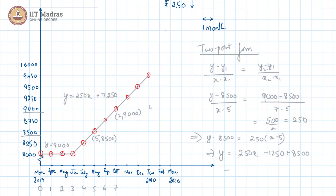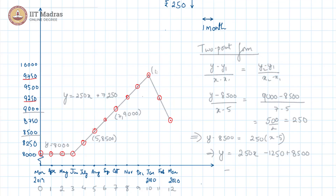Moving on, the next two months the price dropped by 500 each month. So here we are at 9750, then for February we should be at 9250, and the next month another 500 drop brings us to 8750. Numbering the months completely: 8 is August, 9 is September, 10 is October, 11 is November, 12 is December — wait, January is the 10th month with a price of 9750, and March 2020 is the 12th month corresponding to 8750.